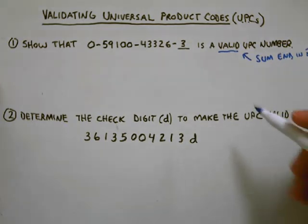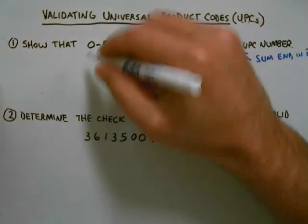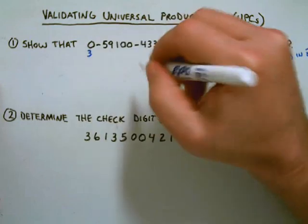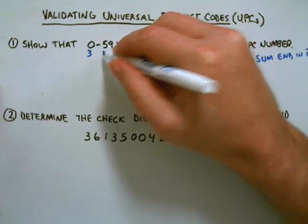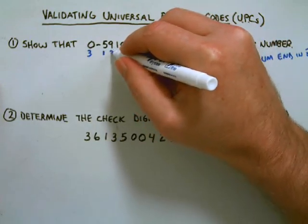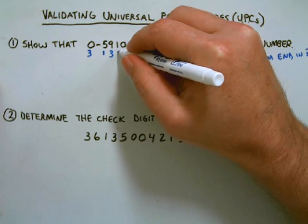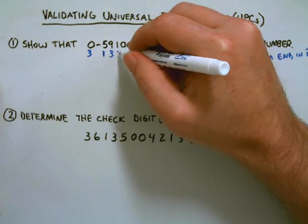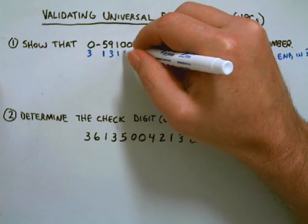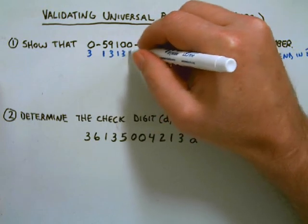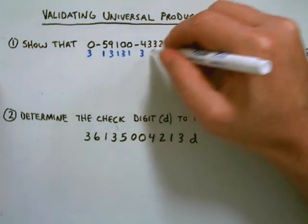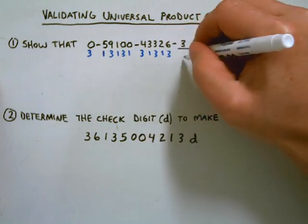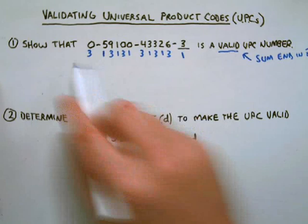If you remember the UPC pattern, it was the more simple pattern. You multiply the first digit by 3, second by 1, third by 3, fourth by 1 — and just alternate that pattern: 3, 1, 3, 1, 3, 1. So we want to apply that pattern.